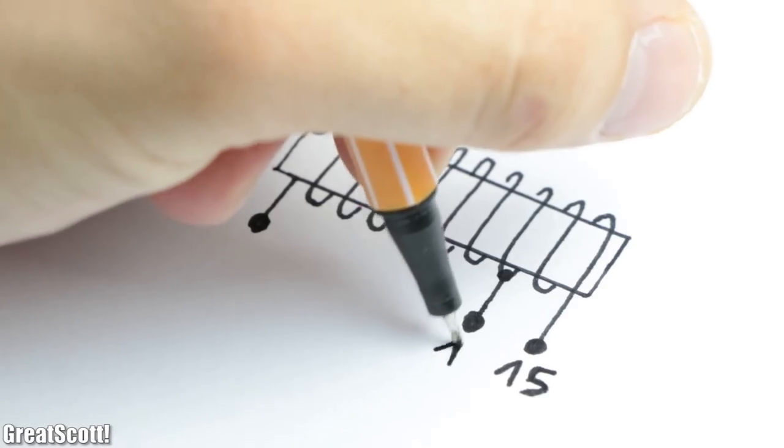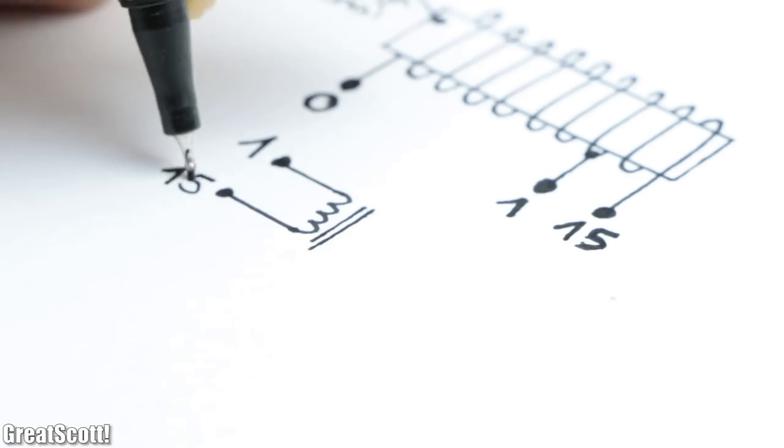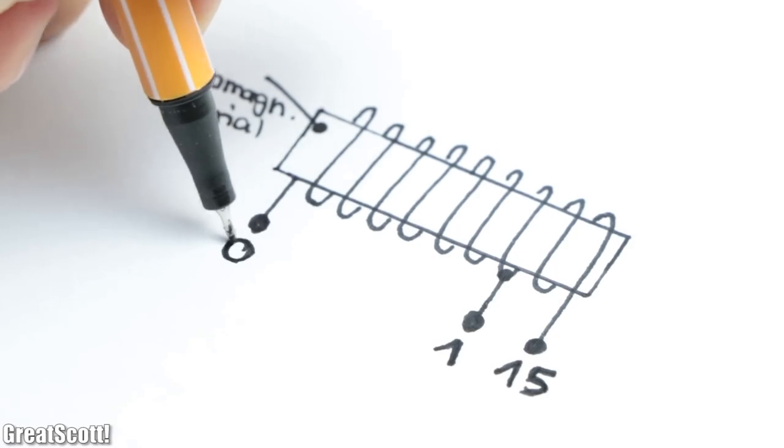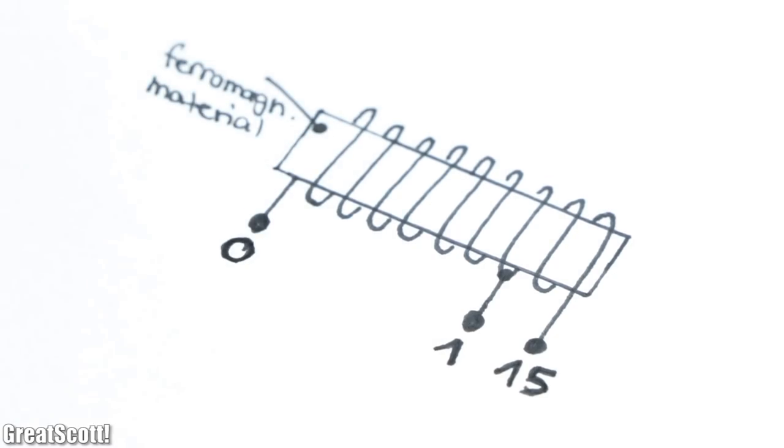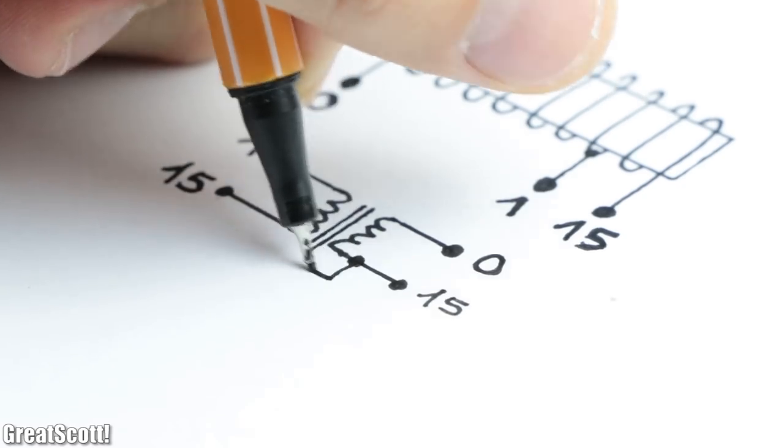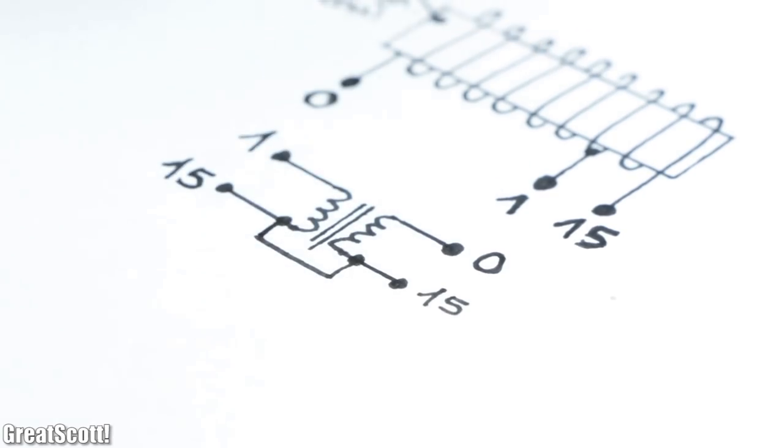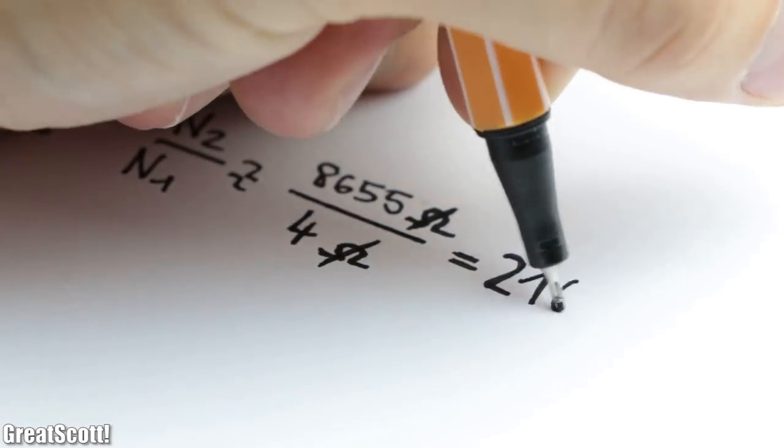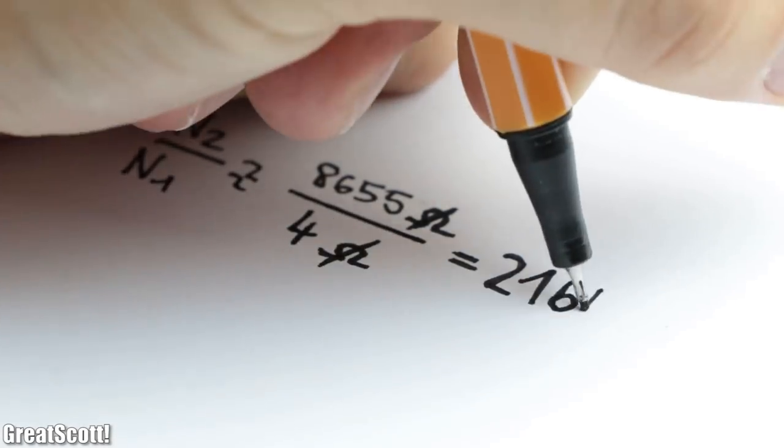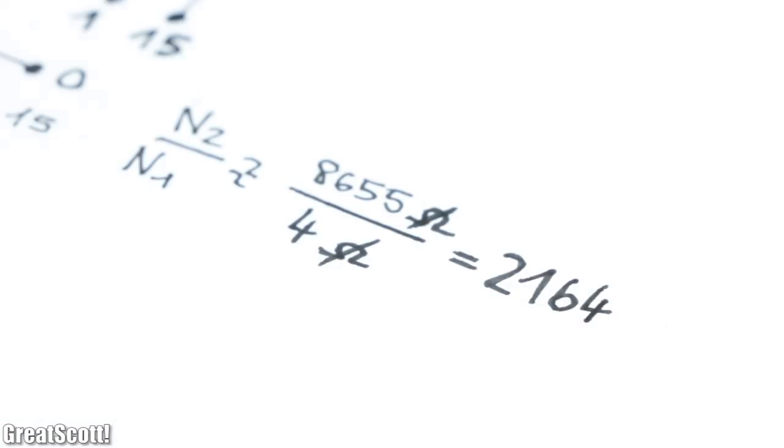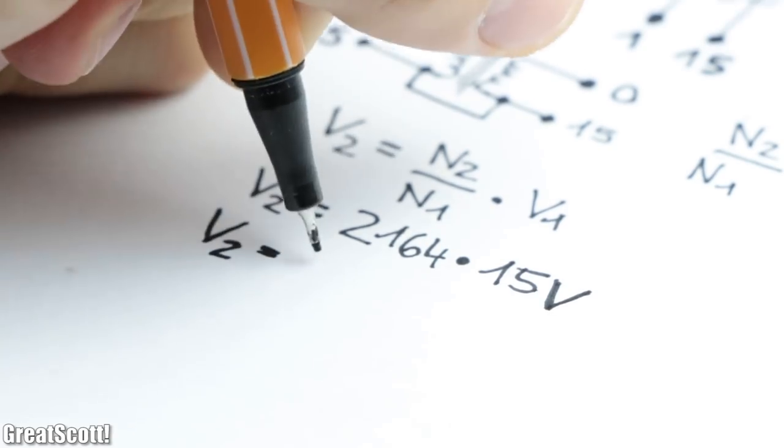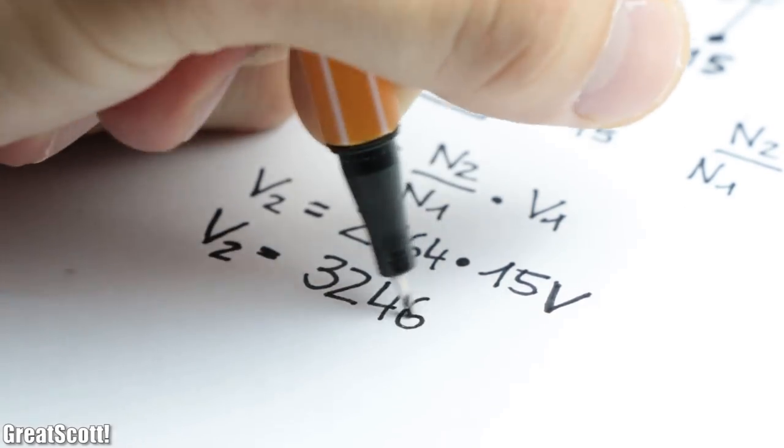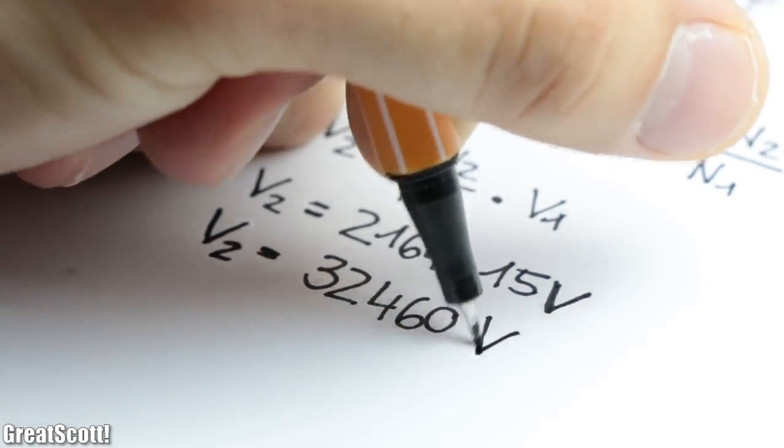The close points are the terminals 1 and 15 which build up the primary coil of the transformer. And the far away connection point is the remaining terminal which in combination with the terminal 15 builds up the secondary coil. According to the resistance measurements, there should be a turns ratio of around 2,164, meaning that if we apply 15 volts AC on the primary we should get around 32,460 volts AC on the secondary.